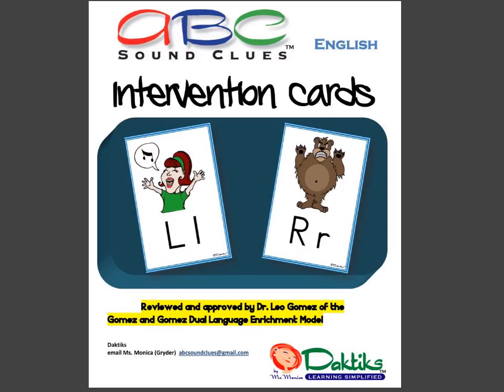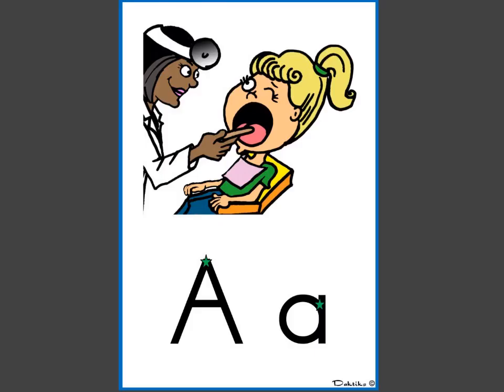Welcome to ABC Sound Clues by dactics. The star is where we start to write each letter. Put your finger on the star and we will trace each uppercase and lowercase letter together and then say the sound. Ready? Let's begin.